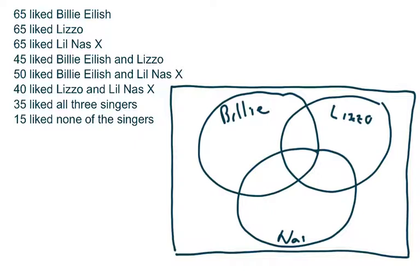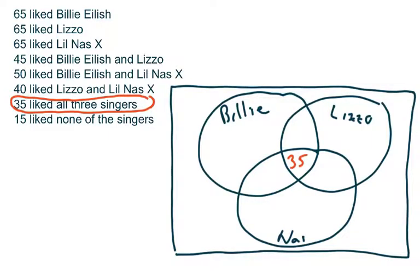As you look down the list, some data only talks about Billie Eilish or just Lizzo, and some talk about two at the same time. But the piece I really want to focus on is that 35 people liked all three singers. That represents the intersection of all three sets, right in the middle. So I'm going to put the number 35 right in the middle to represent the people that like all three. You start by looking at what data involves all three sets.